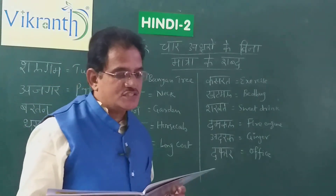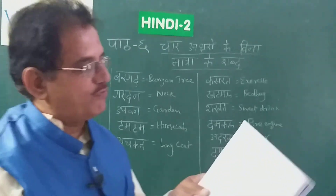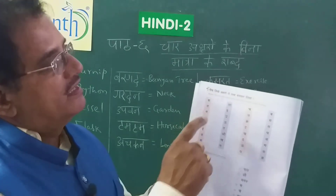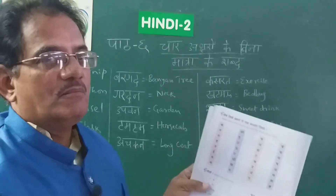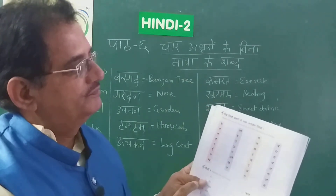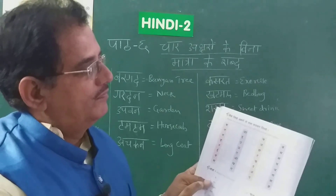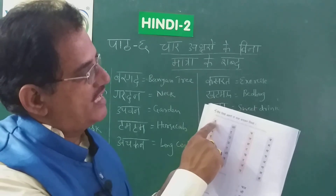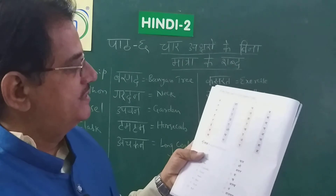Niche Likhe Aksharonse Shabd Bana Kar Likho — make the words beginning with the letters given below. In the next page, page number 14, you can see some letters given there. You have to write the words which begin with that particular letter. For example, Ka is there — Kalam. Beginning with that letter, you have to write that word. Any word you know beginning with that particular letter, you can write in the boxes.